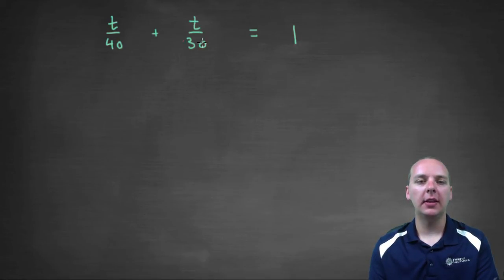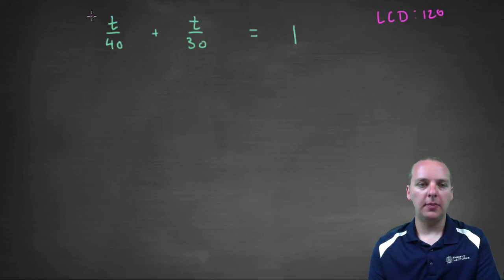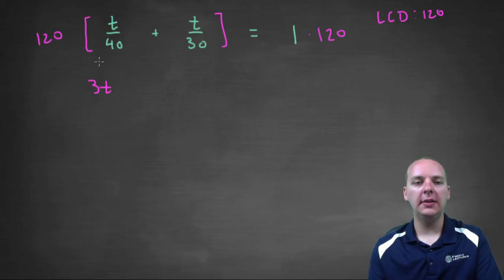So here let's solve this. We're going to find the least common denominator of 40 and 30. The LCD I think would be 120. So we'll multiply both sides through by 120. 120 on the left, 120 on the right, so you would get 3T plus 4T equals 120. 3T and 4T make 7T equals 120.